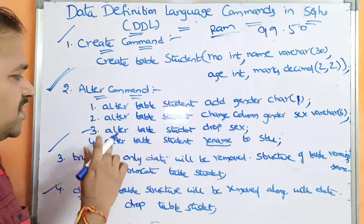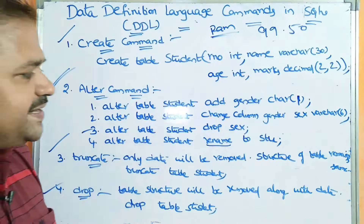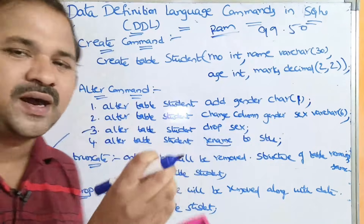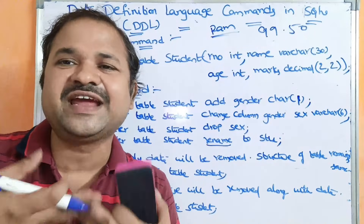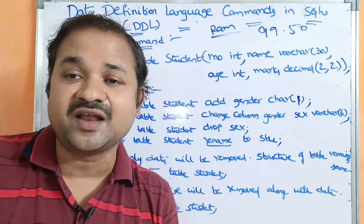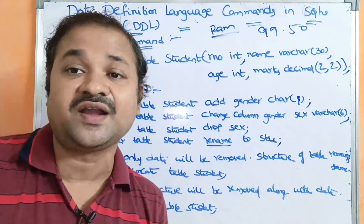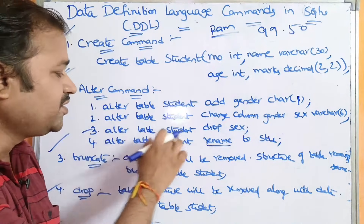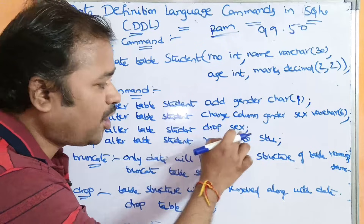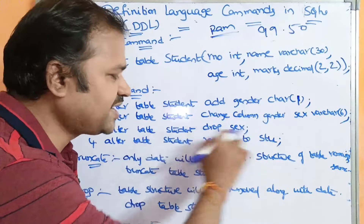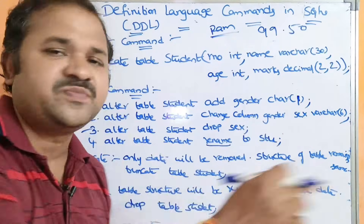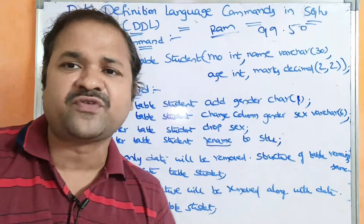The next advantage of the ALTER command is that we can drop an already existing column. We can delete an already existing column with the help of the ALTER command. ALTER TABLE student DROP sex — whenever this statement is executed, the column 'sex' will be removed from the table.